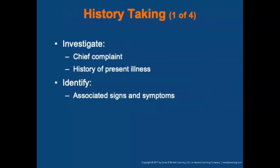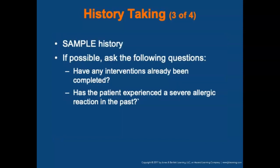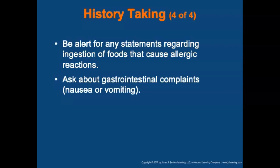Investigate the chief complaint and history of the present illness and identify signs and symptoms. If the patient is responsive, obtain a SAMPLE history including OPQRST, and ask questions specific to an allergic reaction: Have any interventions already been completed? Has the patient experienced a severe allergic reaction in the past? Be alert for statements regarding ingestion of foods that commonly cause allergic reactions, and inquire about gastrointestinal complaints such as nausea and vomiting.